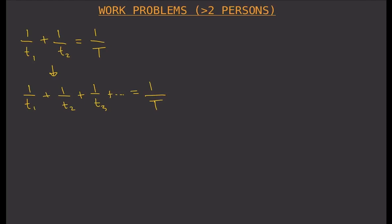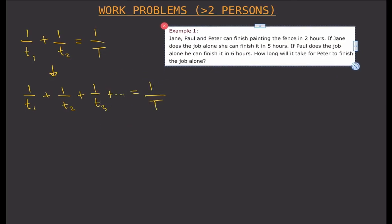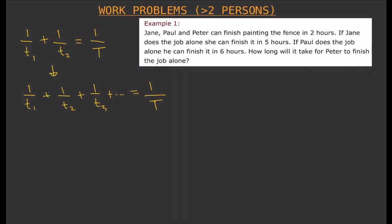Let's have an example. Jane, Paul, and Peter can finish painting the fence in two hours. If Jane does the job alone, she can finish it in five hours. If Paul does the job alone, he can finish it in six hours. How long will it take for Peter to finish the job alone? First, let's note that if the three of them work together, they finish in two hours, so our big T equals two hours.